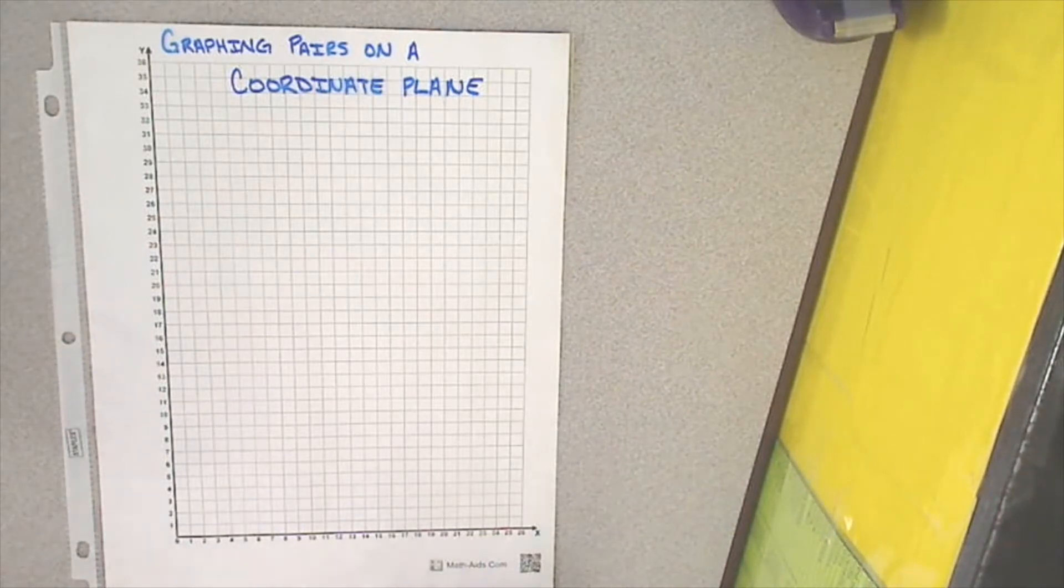Today, we're going to start with something simple, which is just what is a coordinate plane and how do we graph pairs and what is a graphing pair?